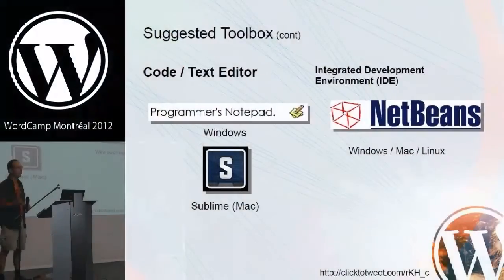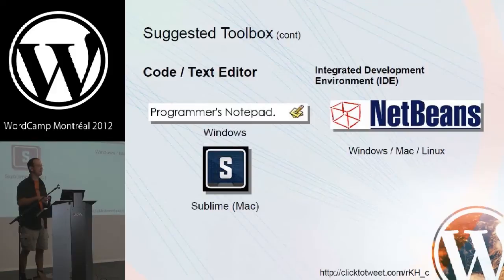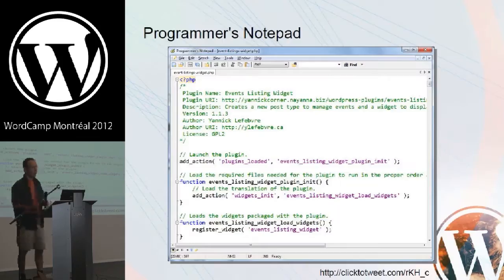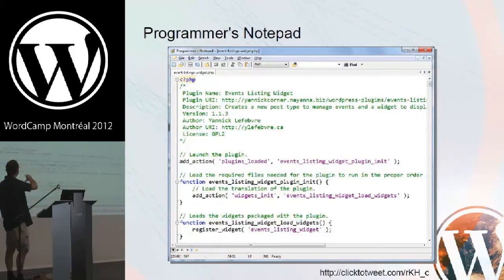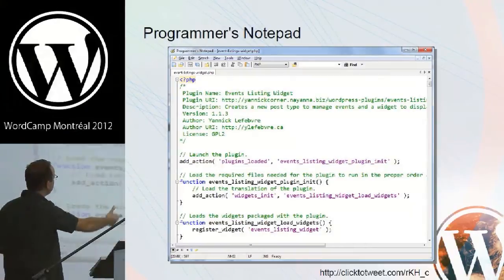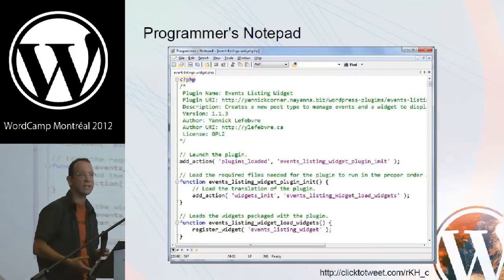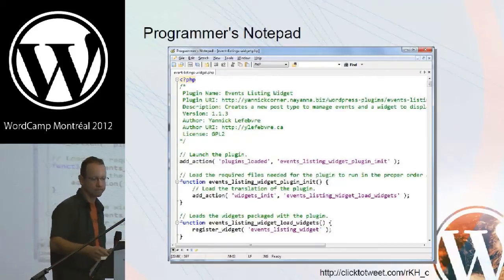The other very helpful tools when writing plugins are either a code text editor or an integrated development environment. If you've ever opened a plugin in Notepad, you'll see it looks very drab — all the same font, same color, not easy to read. When you move to a text editor with proper syntax coloring, it already starts to make a lot more sense. In green you'd see comments, in black the functions, in purple the text strings — already a lot more readable.